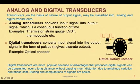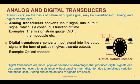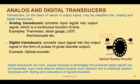Digital transducers convert the input signal into an output in the form of pulses — discrete outputs. An example is an optical encoder. An optical encoder consists of a coded disk with certain openings and opaque regions where the width of the openings and opaque regions are equal, forming equally spaced open and closed sections. In this arrangement, there is a stationary photo detector and a stationary light source such as an LED.